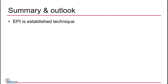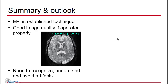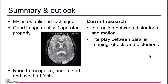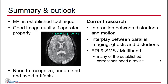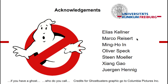In conclusion, EPI is an established technique — it's been around for three decades or more, and can give good image quality if operated properly. But you really need to recognize and understand the artifacts to be able to avoid them. There's still a lot going on with EPI: interaction between distortions and motion, interplay between parallel imaging, ghosting, distortions, and simultaneous multi-slice is a big new kick that has made us look at established techniques again. Thank you for your attention and thank my colleagues for providing the materials.